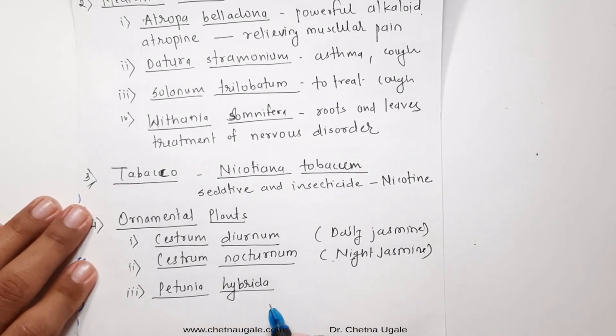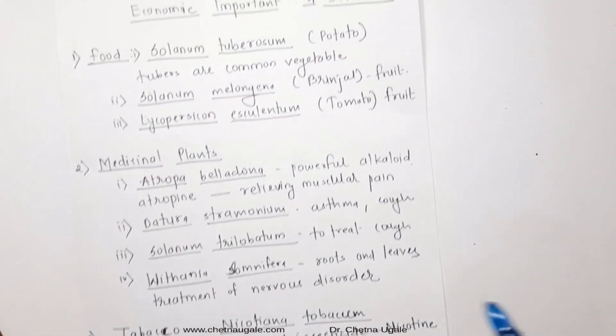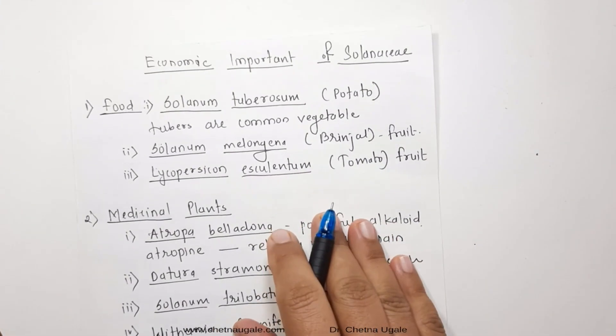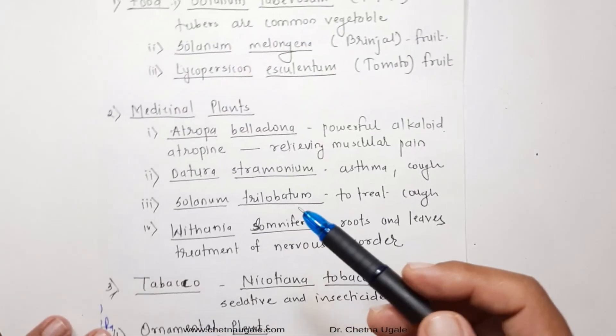So these are the economic importance of Solanaceae family: food plants, medicinal plants, and ornamental plants.